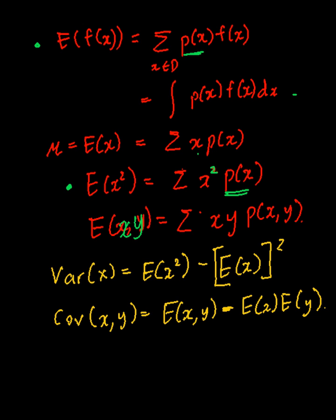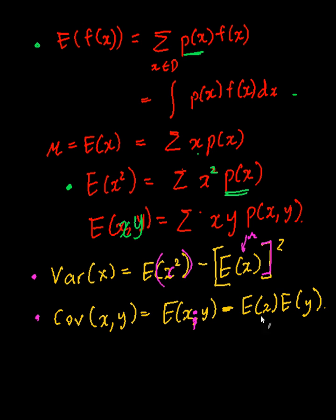A few formulas you should remember: the variance of x is E[x²] minus (E[x])². Notice the difference — E[x²] is the expectation of x-squared (inside the brackets), and then we square the mean. The covariance is E[xy] minus E[x] times E[y]. Now let's go through some examples.